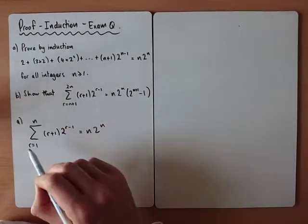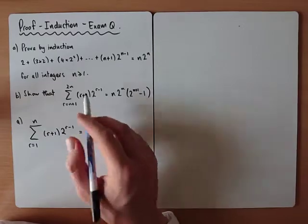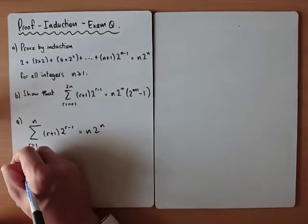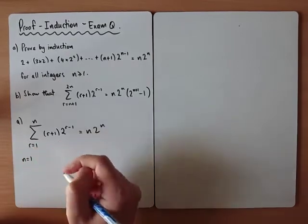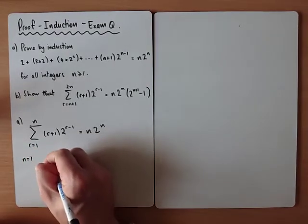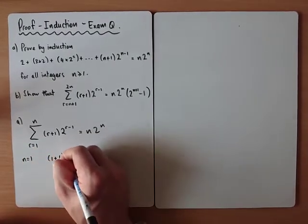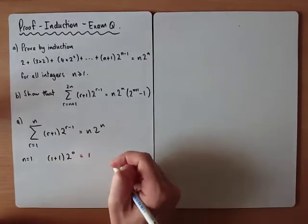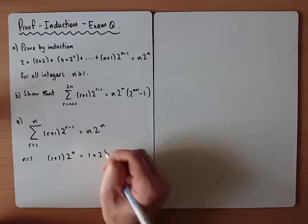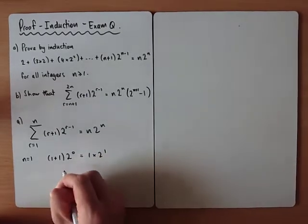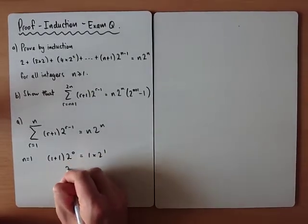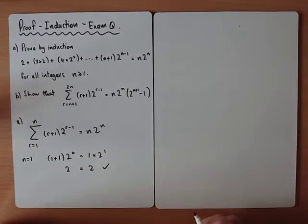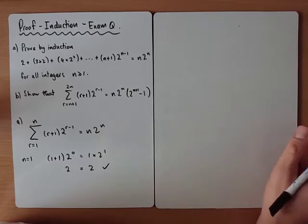Once we've interpreted what the series means, we start the induction process. For n=1: (1+1) × 2^0 = 1 × 2^1, so 2 = 2. That confirms it works for the first term in the sequence.